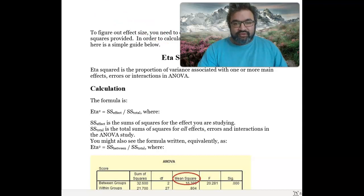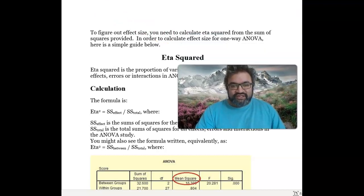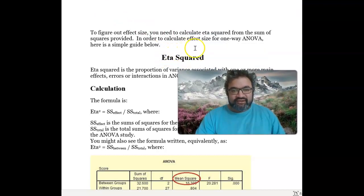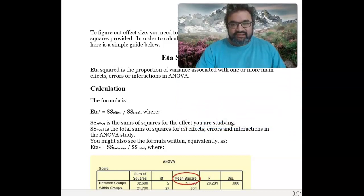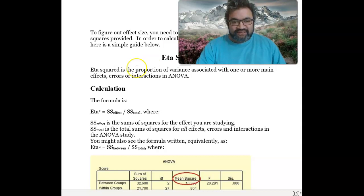Going to this worksheet here, I wanted to start by saying that the effect size for one-way ANOVA is eta squared, and then I'll go through the calculation and show where it is in SPSS.